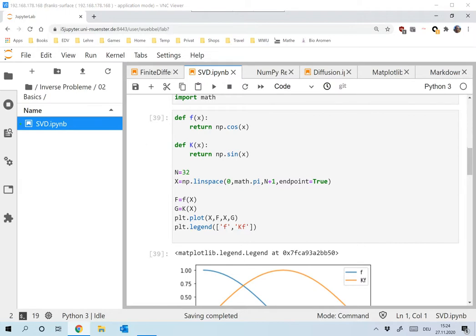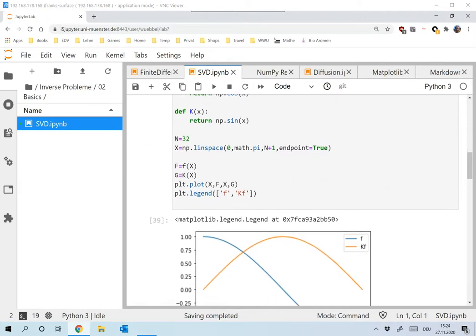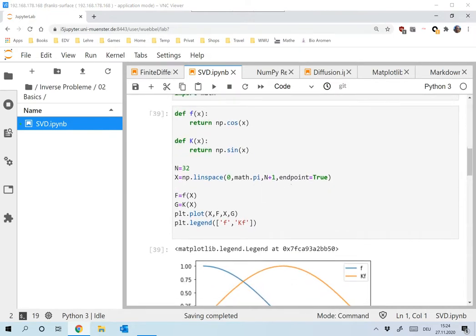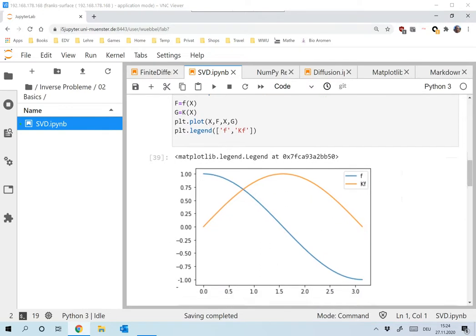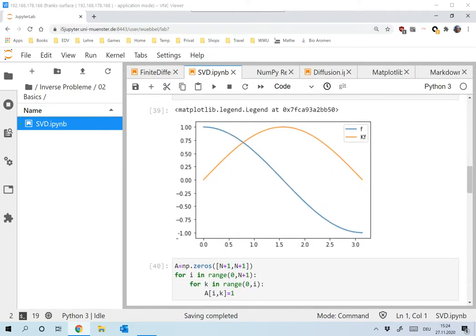Now we discretize all this. I start with 32 discretization points and evaluate my function f and my function kf at these points, at the x_k. The function I'm looking for is the blue one. The data that I'm given is kf. I don't look at any errors at this point; I assume all the data is noise free.